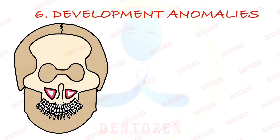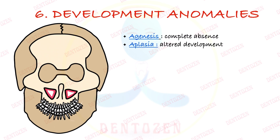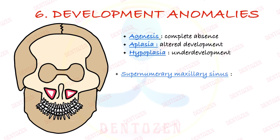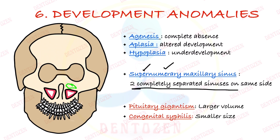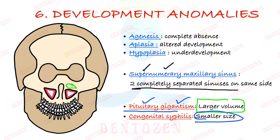Now talking about developmental anomalies. Sometimes there is complete absence of the sinus — called agenesis. There can be aplasia — altered development of the sinus. Then hypoplasia — underdevelopment, resulting in a small sinus. Then supernumerary sinus — more than one sinus present on one side, two completely separated sinuses on the same side. Sinuses may be of larger volume in conditions like pituitary gigantism, or smaller in congenital infections like syphilis.